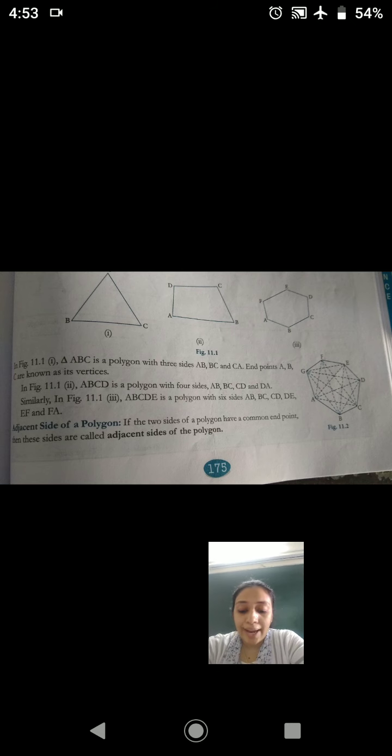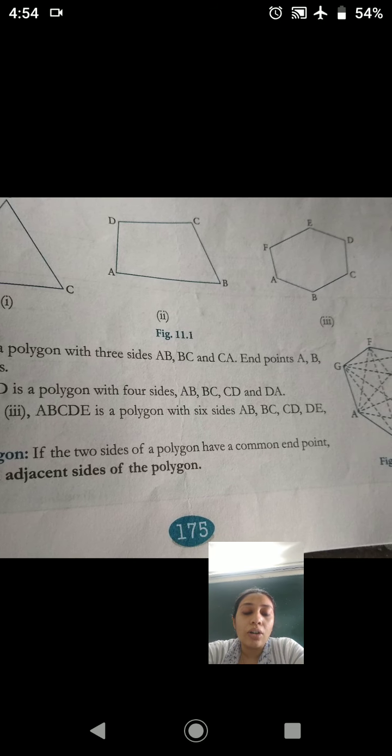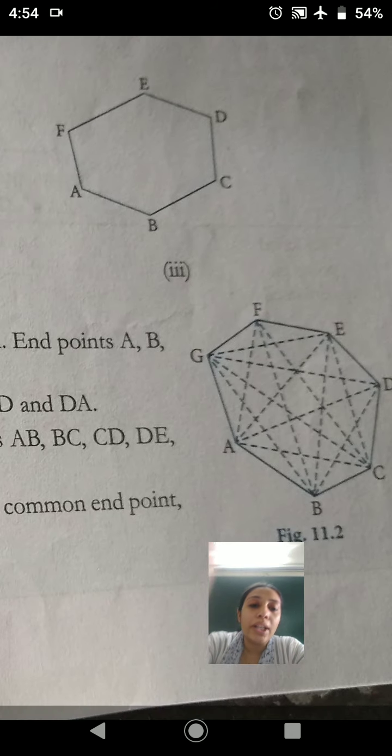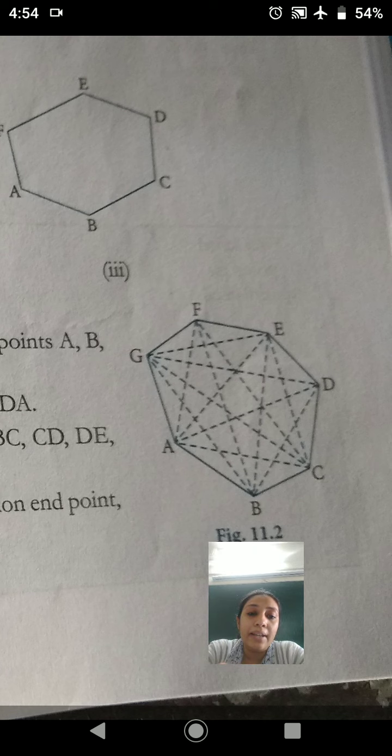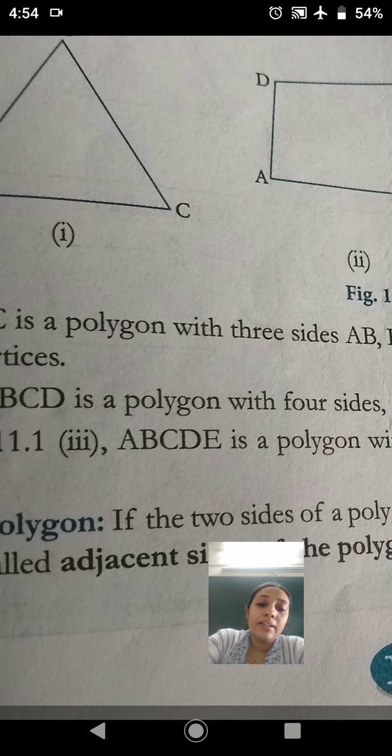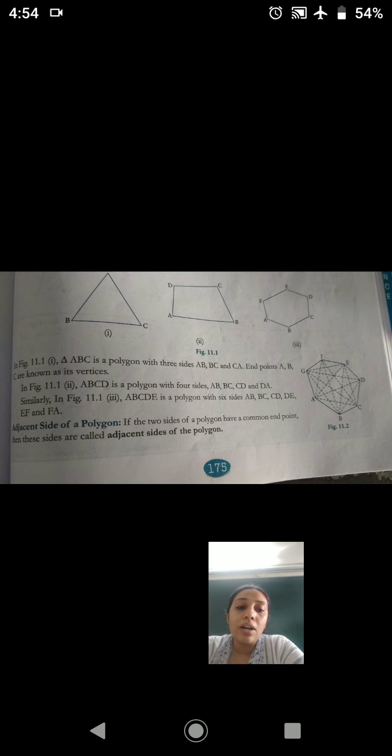Now, we'll start with adjacent side of a polygon. What is the adjacent side of a polygon? The definition is given here, let's look at it first. If the two sides of a polygon, whichever two sides of the polygon, have a common end point. It has a common end point, look here at A, G and A, B. In this, what is the common end point? A, right?